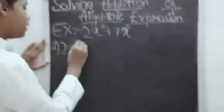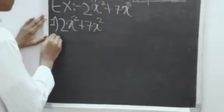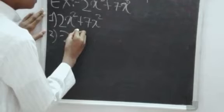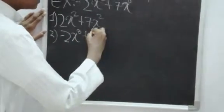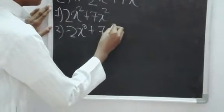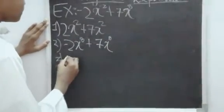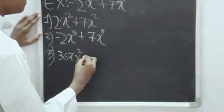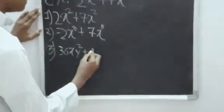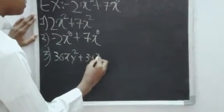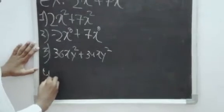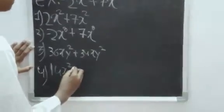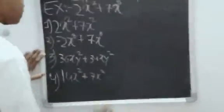2x squared plus 7x squared. Minus 2x plus 7x. Minus 2x plus 5x squared.